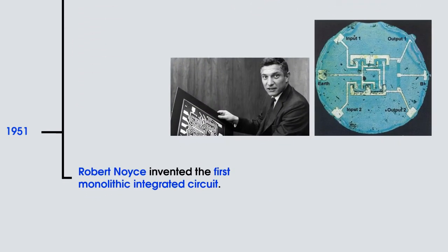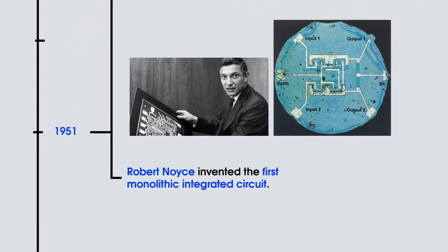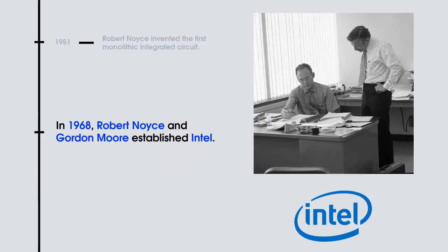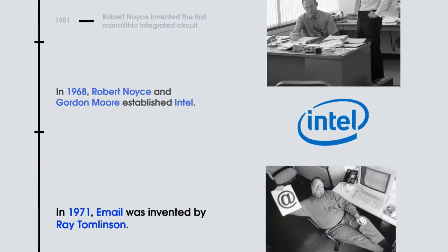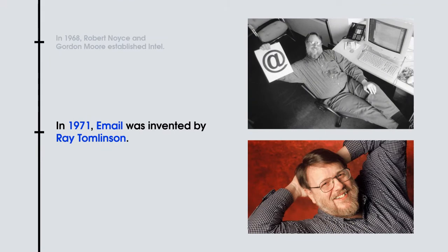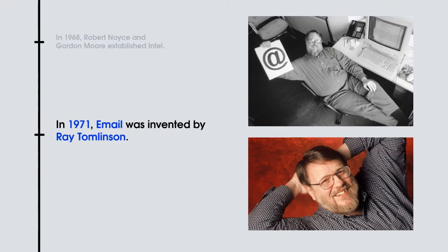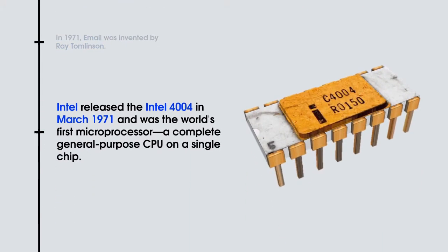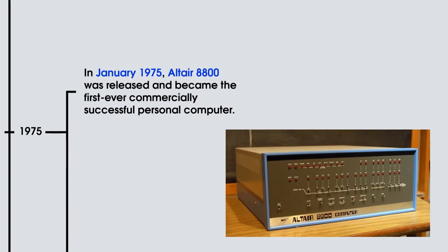In the same year, Robert Noyce invented the first monolithic integrated circuit. In 1968, Robert Noyce and Gordon Moore established Intel. E-mail was invented by Ray Tomlinson in 1971. Intel released the Intel 4004 in March 1971, and it was the world's first microprocessor — a complete general-purpose CPU on a single chip.